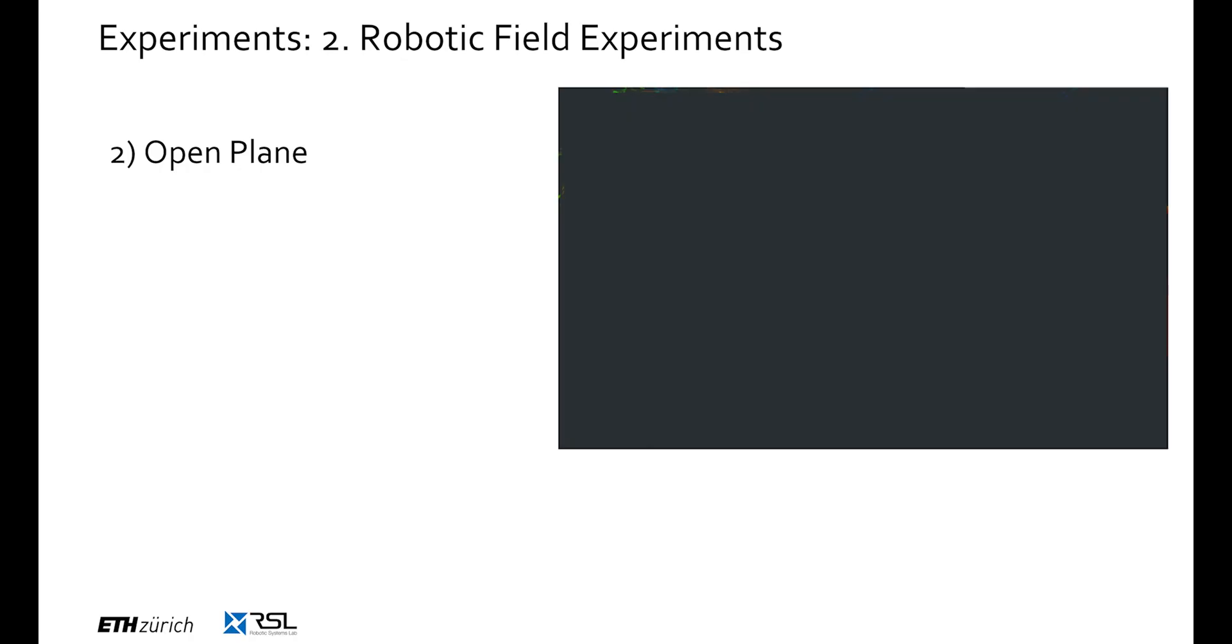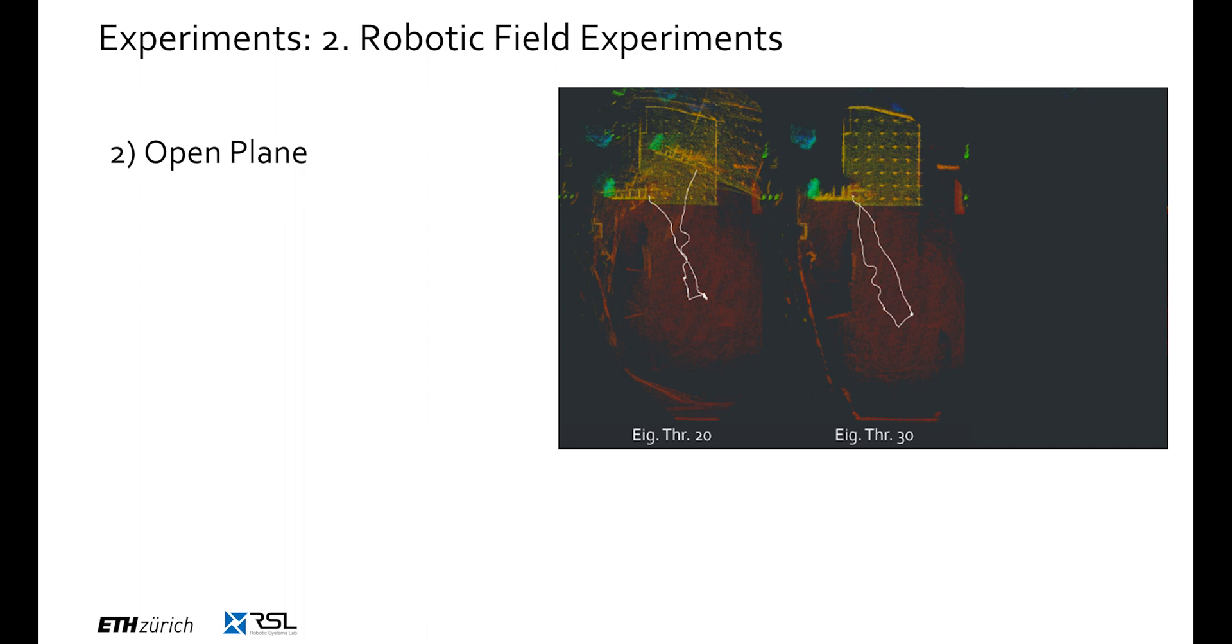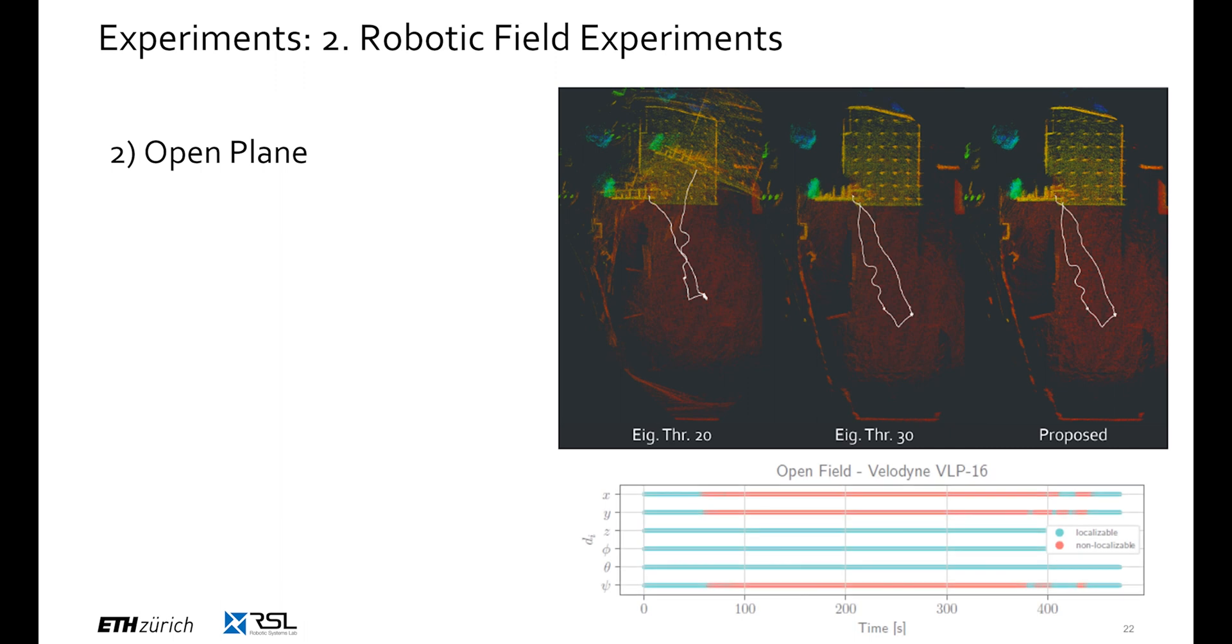A similar behavior can also be observed for the open-plane environment. No detection or a too-small detection threshold of 20 leads to a broken map. In contrast to the tunnel environment, in this scenario, a threshold value of 30 is sufficient to detect the degeneracy and improve the mapping quality. Without any modifications, the proposed approach performs as well as the baseline after tuning of the parameters, which can also be observed in the predictions on the bottom right.